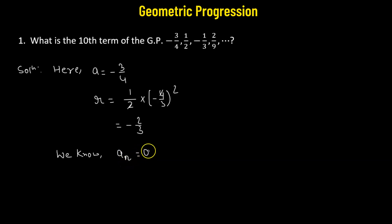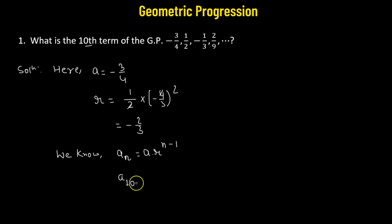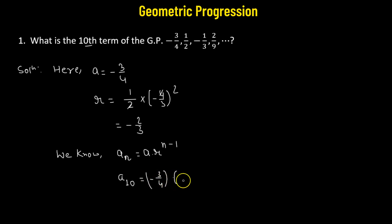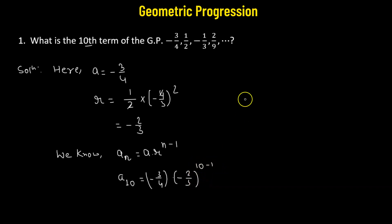We know that the general term of a geometric progression, a_n, is given by a times r raised to the power of n minus 1. So the tenth term of the geometric progression is a_10 equals the first term, negative 3 quarters, multiplied by the common ratio negative 2 thirds, raised to the power of 10 minus 1.